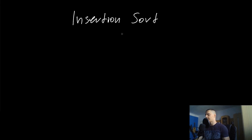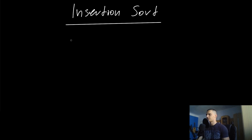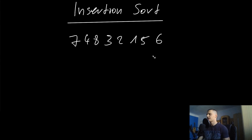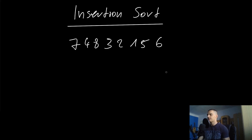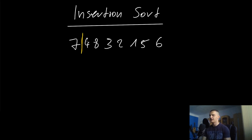Let's start with the intuition behind insertion sort. As the name already suggests, we're going to insert numbers or elements where they belong instead of just swapping all the time. Let's say we have a list like seven, four, eight, three, two, one, five, six. Instead of going through it and swapping elements, what we do is we split this list up — in our head — into two parts: a sorted part and the unsorted part. In the beginning, the sorted part is just one element, the first element, seven.